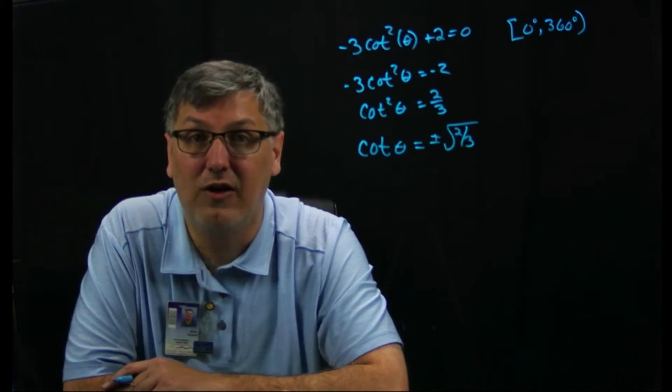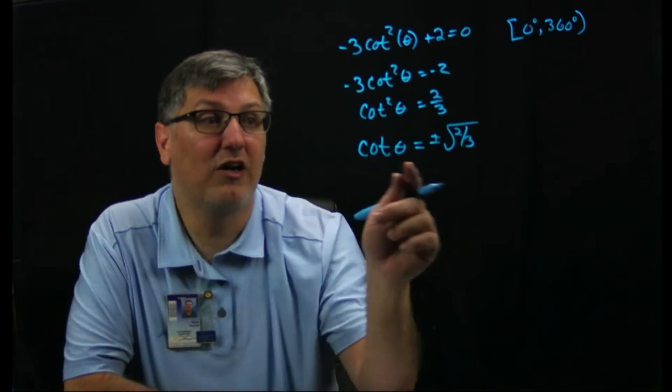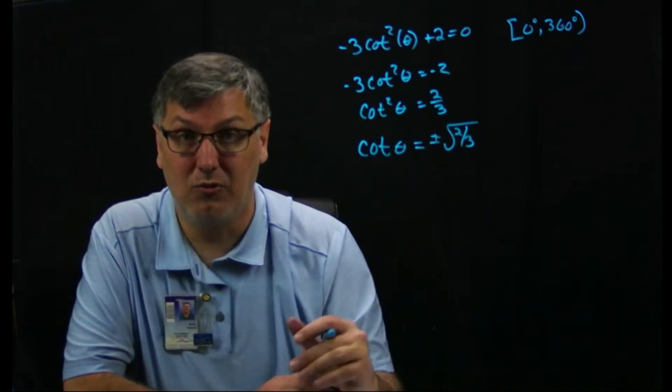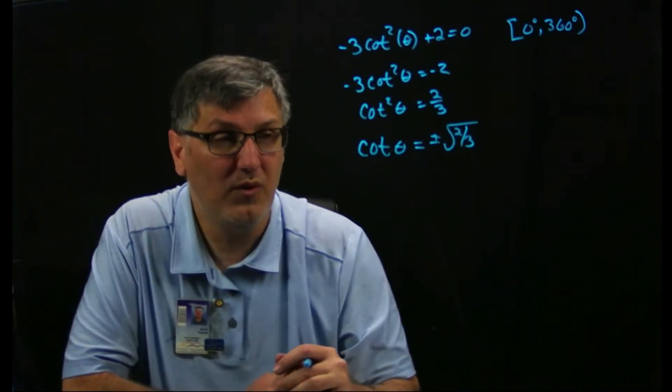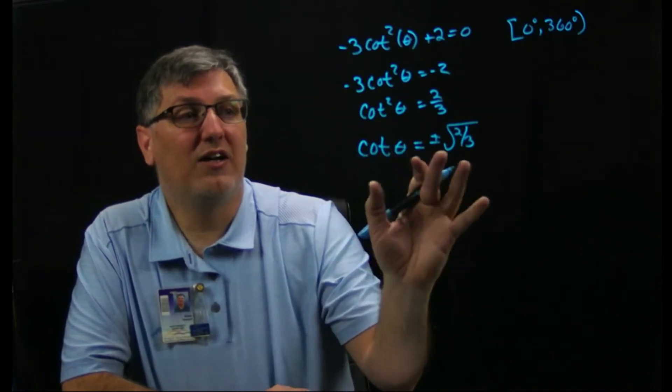And I'm not going to mess with rationalizing the denominator or anything else. The reason why is I have to put it in the calculator anyway. Why make an extra step and possibly make a mistake? Because I could just put square root of 2 divided by 3 and be done with it in the calculator. You get an answer. Okay, now what I need to recognize here.